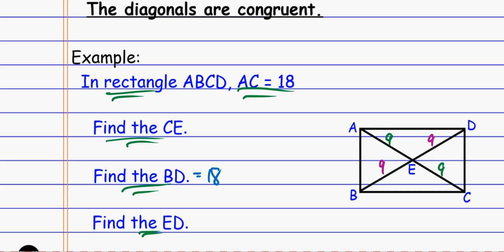So CE is one of those pieces that equals nine units, and ED is also one of the smaller pieces that equals nine units as well. So we have to use the special property for rectangles, but we still have to use the properties for parallelograms as well. Parallelograms have diagonals that bisect each other, but for a rectangle, the entire diagonals are also congruent — they're also the same.